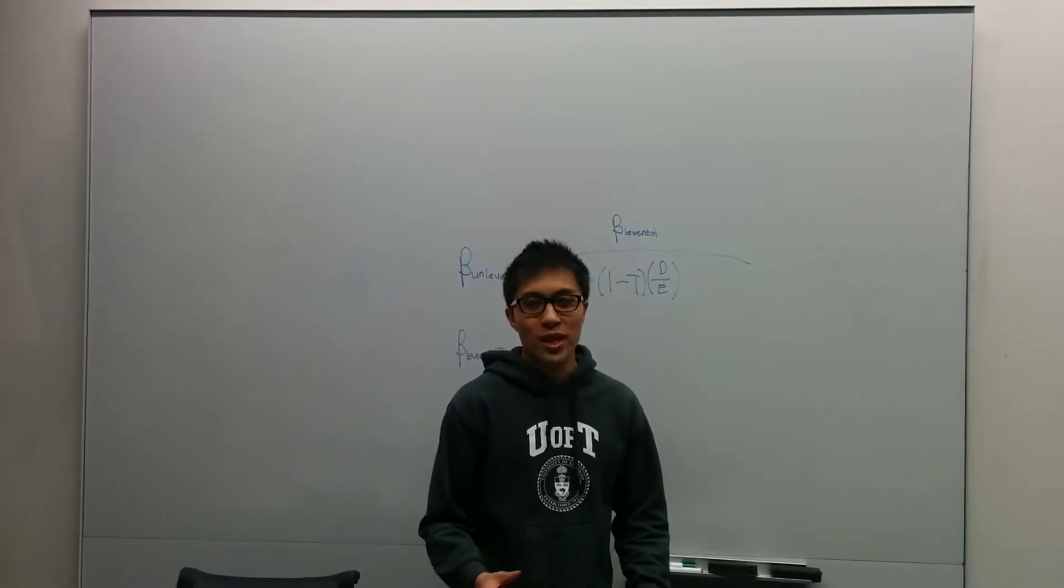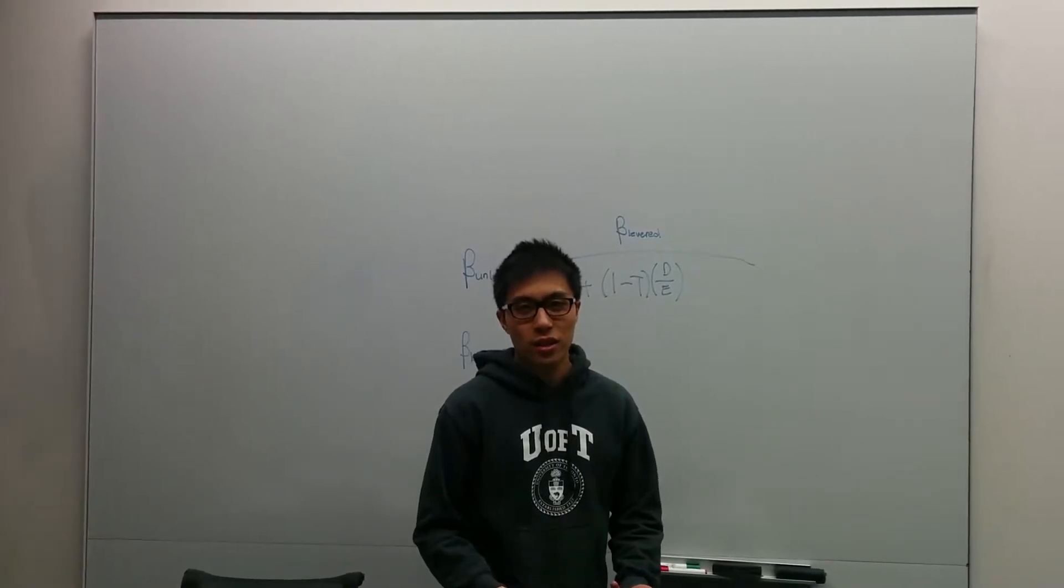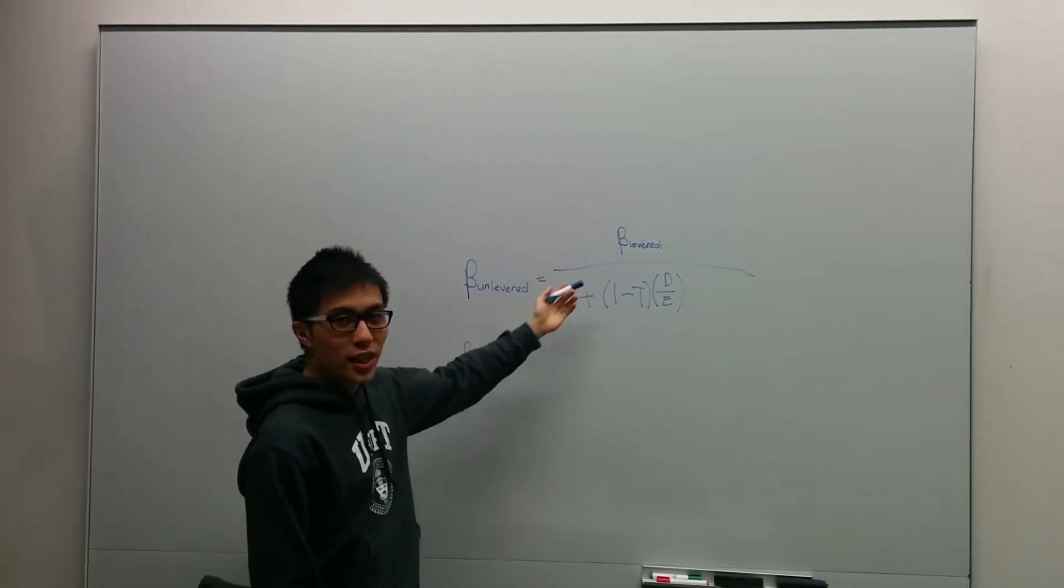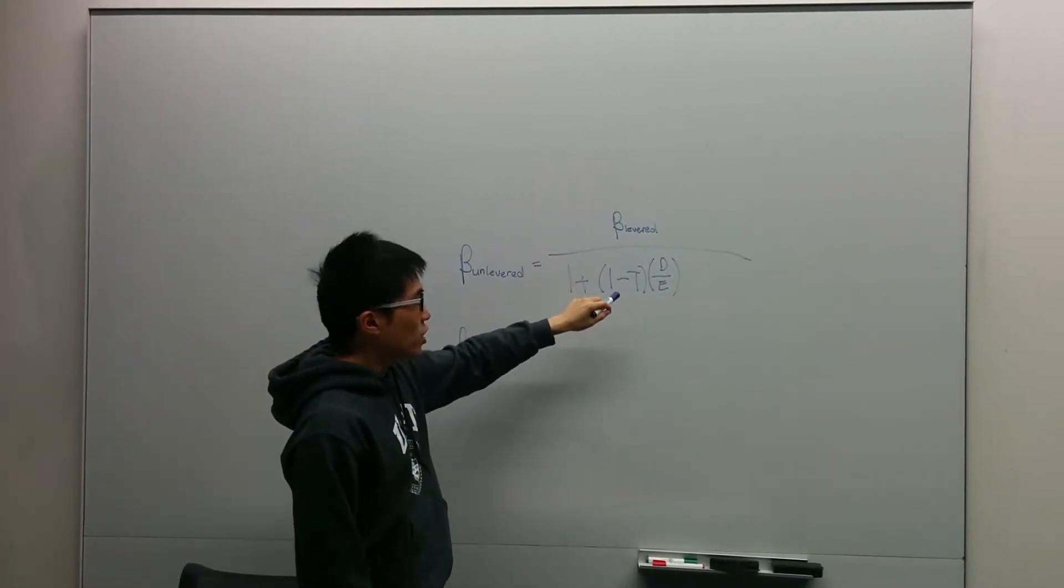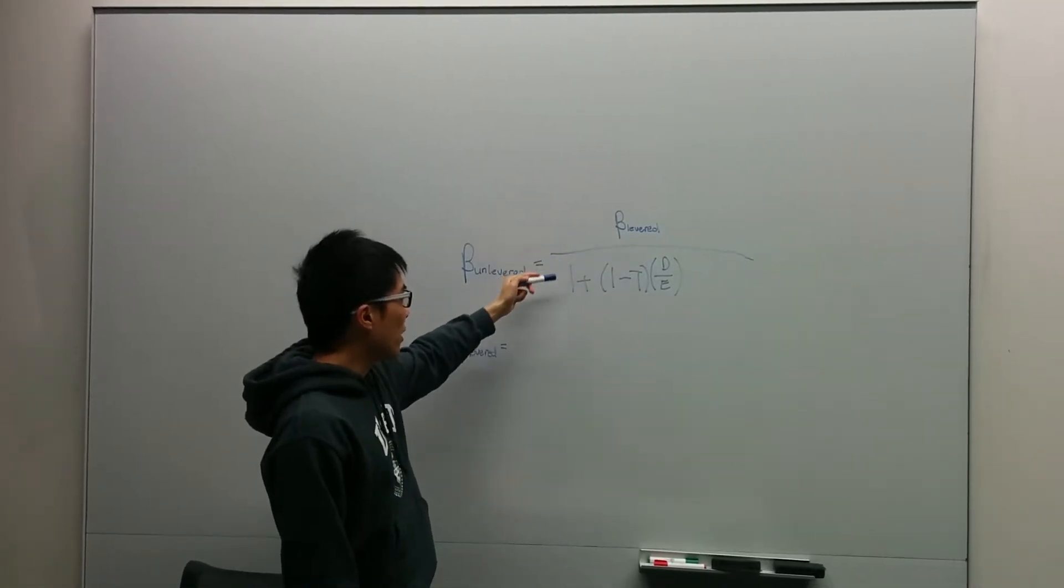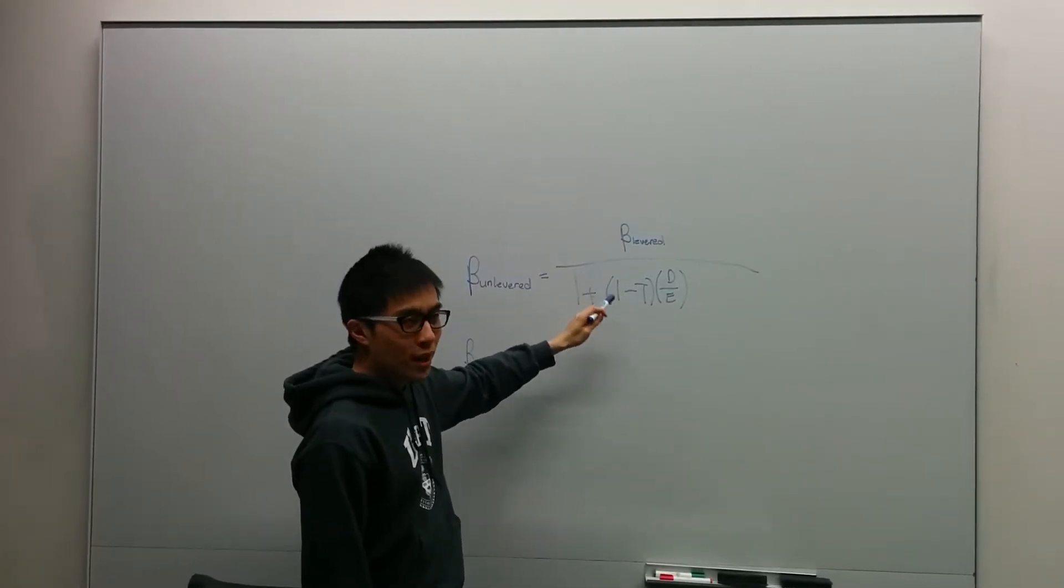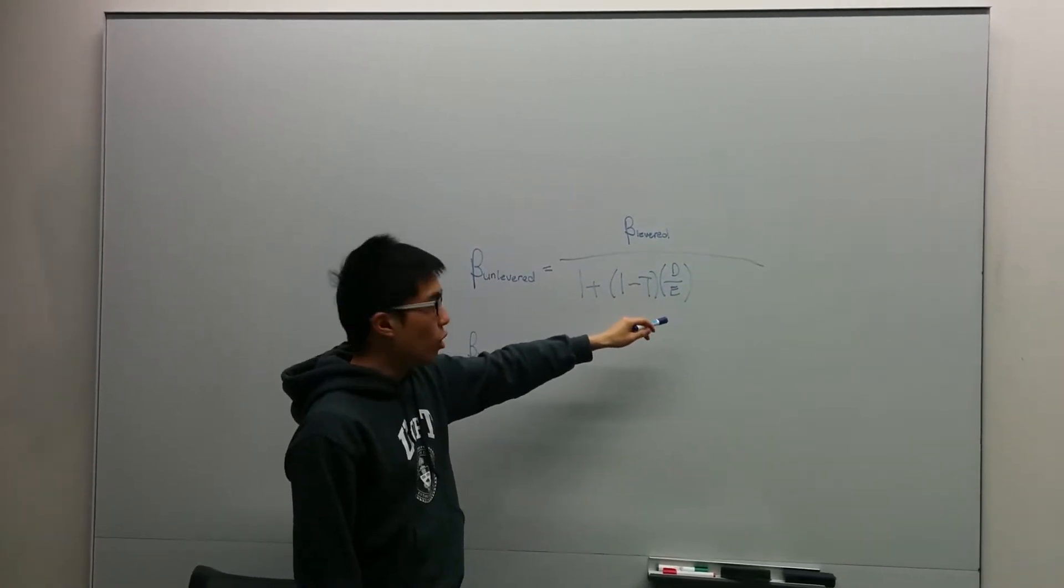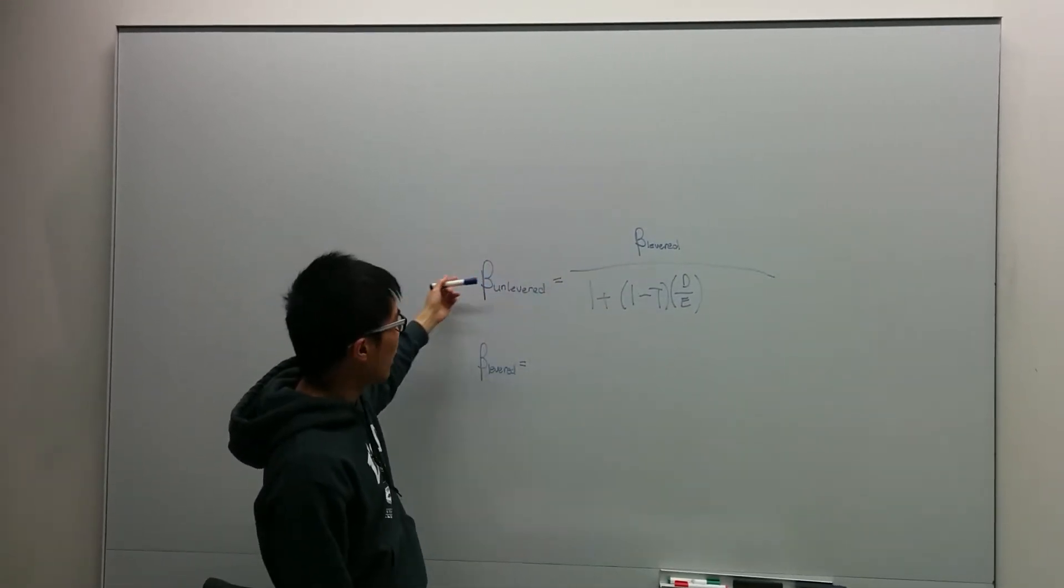When we unlever the beta, we make it capital structure neutral, and that way it can be used to compare against other companies. How do we unlever beta? We're unlevering beta using this formula. Unlevered beta equals the levered beta divided by 1 plus (1 minus the tax rate) times debt over equity. This essentially neutralizes out the capital structure. The formula captures the proportion of debt compared to equity, accounts for the tax rate, and gives you the unlevered beta.